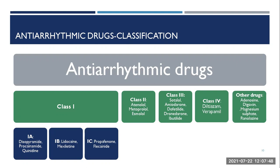Class 2 drugs include atenolol, metoprolol, and esmolol. As you can see, the suffix is '-lol,' so they belong to the class of beta blockers. Class 3 consists of sotalol, amiodarone, dofetilide, dronedarone, and ibutilide. Class 4 includes diltiazem and verapamil. Other drugs include adenosine, digoxin, magnesium sulfate, and ranolazine.